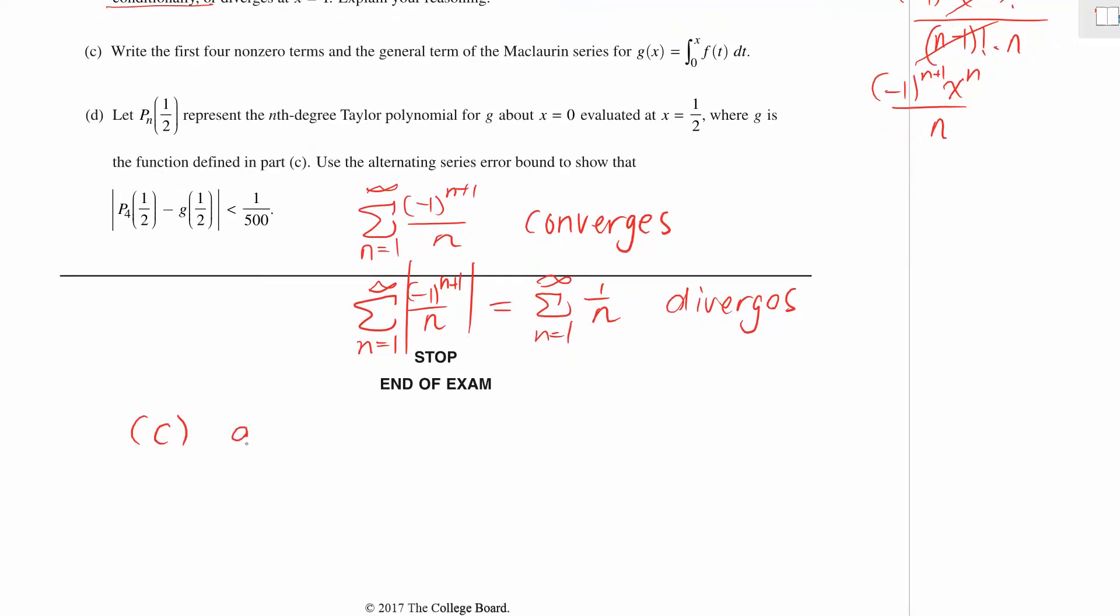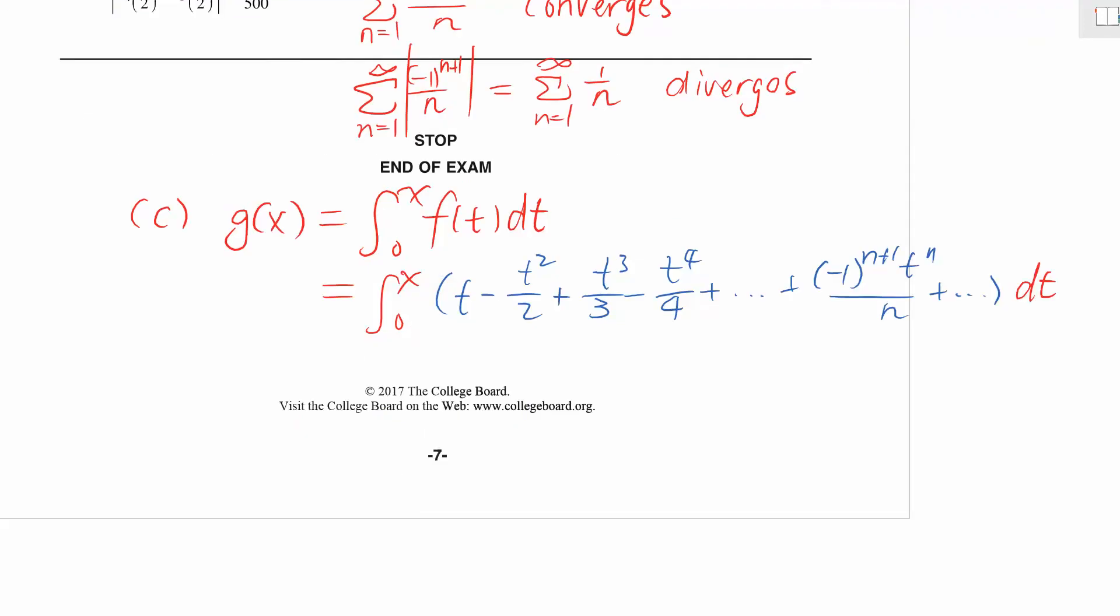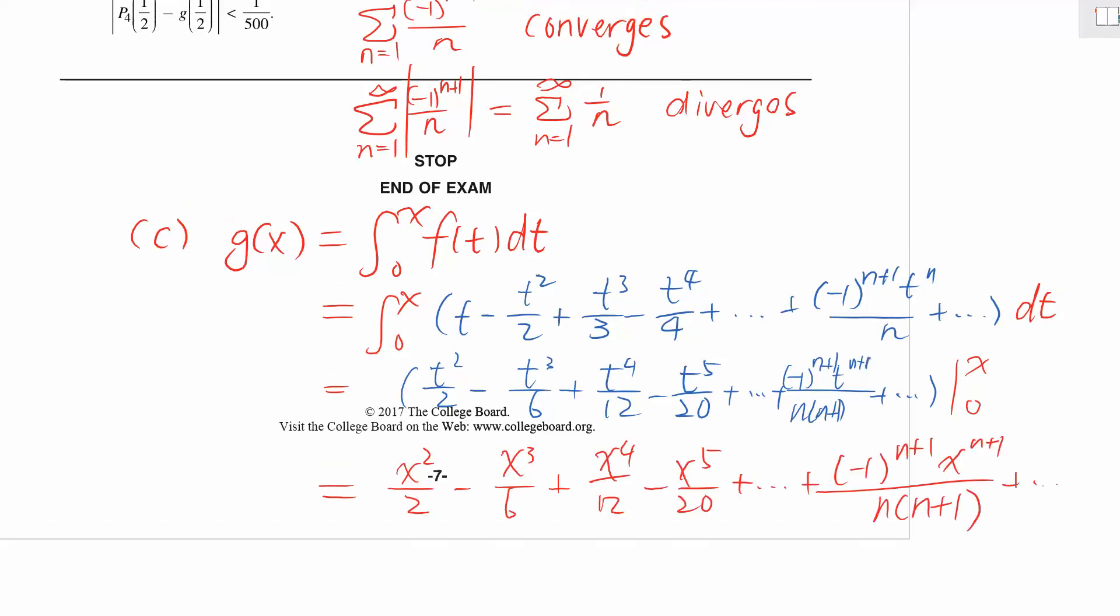Then we have another Maclaurin series g(x) which is the integration from 0 to x of f(t) dt. This can be pretty easy. What we have to do is just rewrite f(t) as a Maclaurin series and take integration of each term, which looks like this. Then we can go on and take the derivative of each term and evaluate that from x to 0, and we are done with this question.